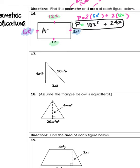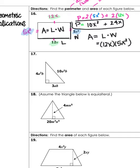Since this is a rectangle, to find the area we do length times width. The length is 12x and the width is 5x squared. Area equals 12x times 5x squared. We do 12 times 5, which is 60. This is x to the first times x squared — multiplying means we add exponents, so one plus two makes three. Your answer is 60x to the third power.